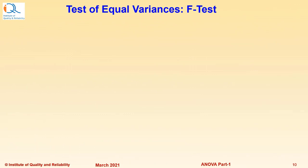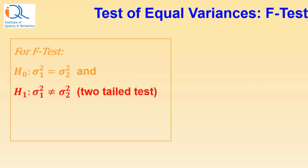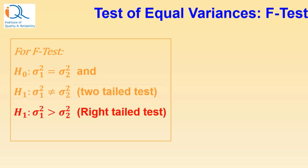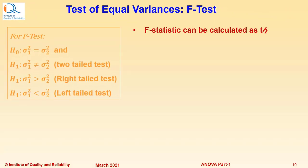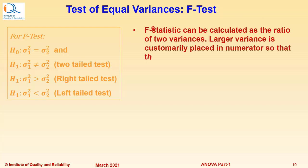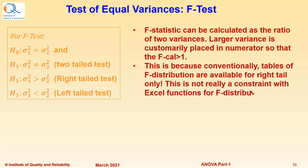For the F-test, the null hypothesis is equality of the variances. The alternate hypothesis could be inequality of variances — a two-tailed test with alpha risk equally distributed on both tails — or sigma-1-squared greater than sigma-2-squared, a right-tailed test, or sigma-1-squared less than sigma-2-squared, a left-tailed test. The F-statistic is calculated as the ratio of the two variances, with the larger variance customarily placed in the numerator so that F-calculated is greater than 1, since F-distribution tables are conventionally available for the right tail only.